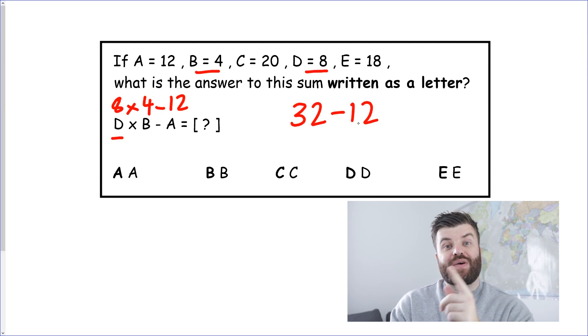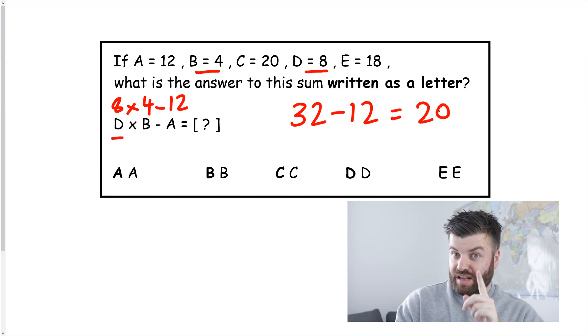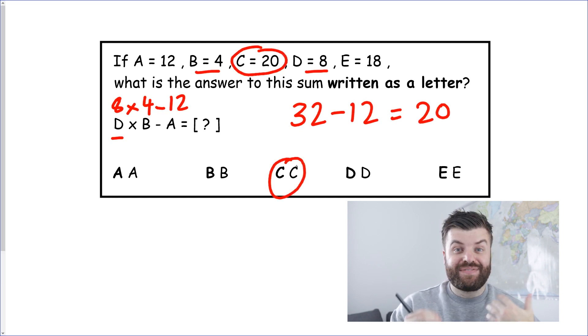So when you have more than one thing to do just work left to right. So first we have 8 times 4. 8 times 4 if you know your times tables is 32 and we've still got to subtract the 12. So we've got 32 now. Take away A which is 12. The answer is 20. Last step change it back into a letter. Go to the top find 20 and the answer is C. It's as simple as that.